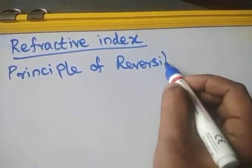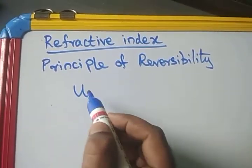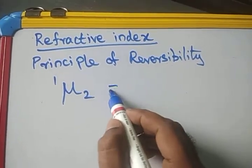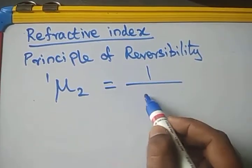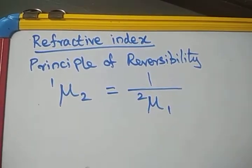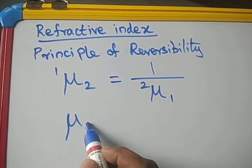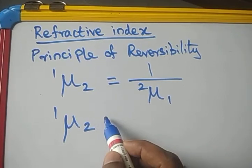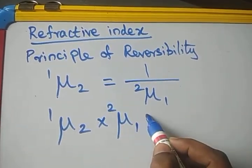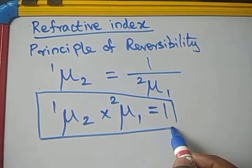The principle of reversibility states that the refractive index of the second medium with respect to the first medium is equal to the reciprocal of the refractive index of the first medium with respect to the second medium. So if you multiply them together, the refractive index of the second medium with respect to the first, into the refractive index of the first with respect to the second, equals 1. This is the principle of reversibility.